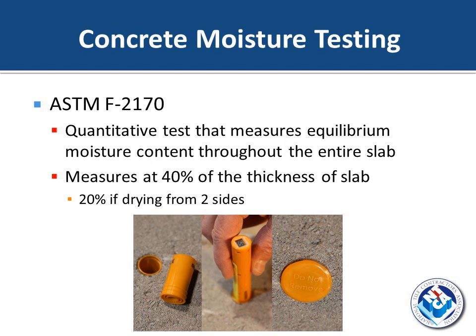For a five-inch slab, you drill down two inches and place the sensor. If the slab is drying from two sides — as in multi-level construction — you only need to drill in about 20%, so about one inch for that same five-inch slab. The sensor is placed, and 24 hours later once it has reached equilibrium, you come back and take your measurements. Three tests are required for the first 1,000 square feet, as the moisture content in one area may differ from another.